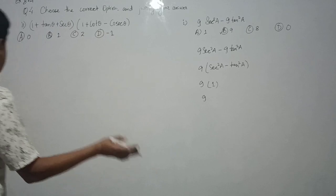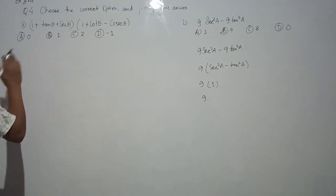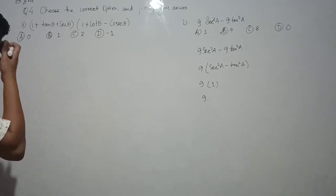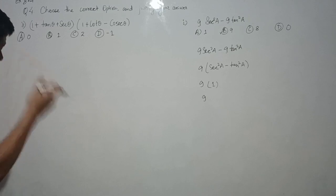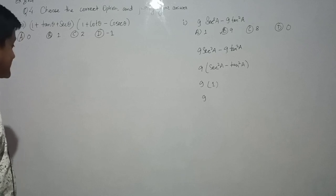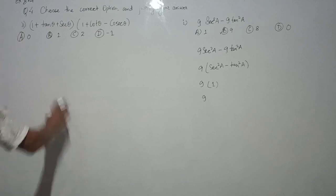Now moving to Question number 2: (1 + tanθ + secθ)(1 + cotθ − cosecθ). There are three terms in each bracket.